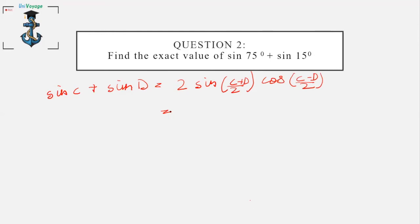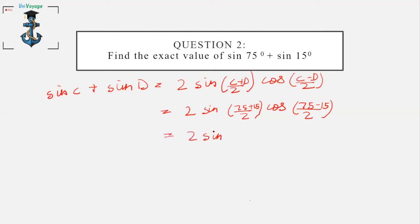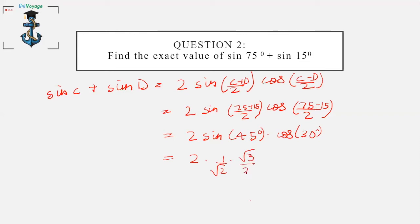This can be written as 2sin((75+15)/2)·cos((75-15)/2), which gives 2·sin(45°)·cos(30°). Since sin45° = 1/√2 and cos30° = √3/2, multiplying these out gives a value of √3/2, which is the answer.